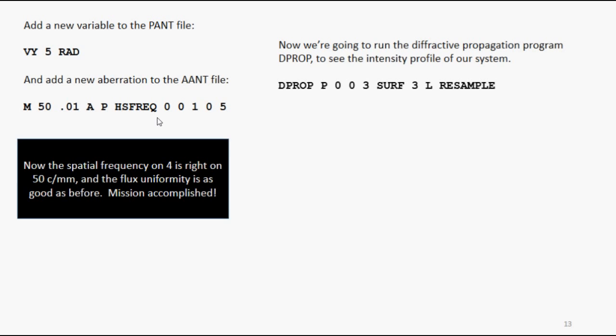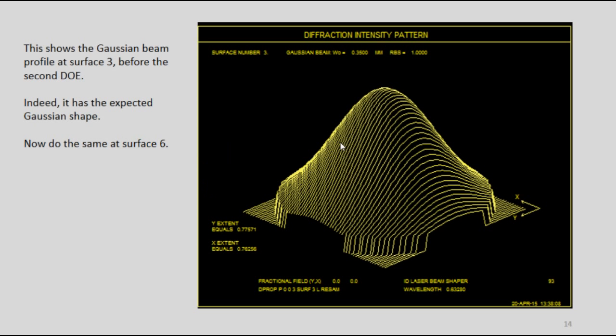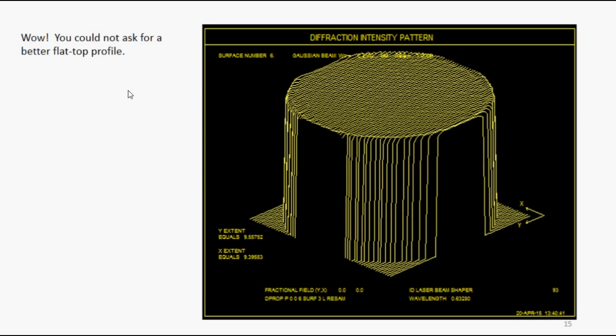Now we're going to test this thing. We're going to run the diffraction propagation program, Dprop, to see the intensity profile. First of all, let's look at it on surface 3, which is coming out of the first DOE. And indeed, it has the Gaussian profile, which we'd expect, because we didn't make it uniform yet. So now let's do the same thing on surface 6. And oh my goodness, look at that. You couldn't ask for a better flat top profile. This is just great.